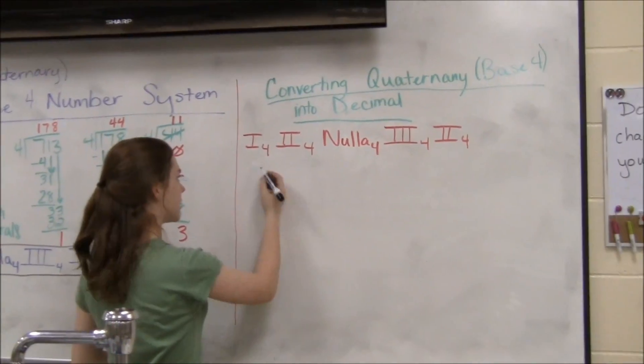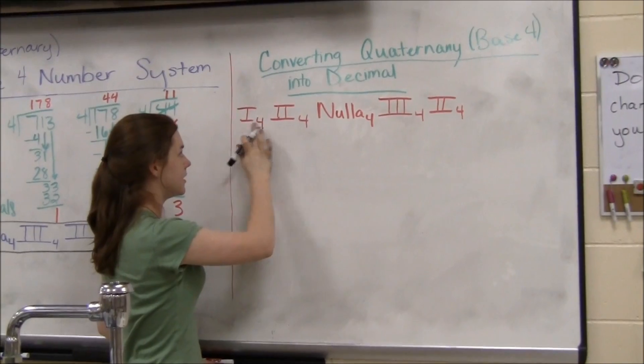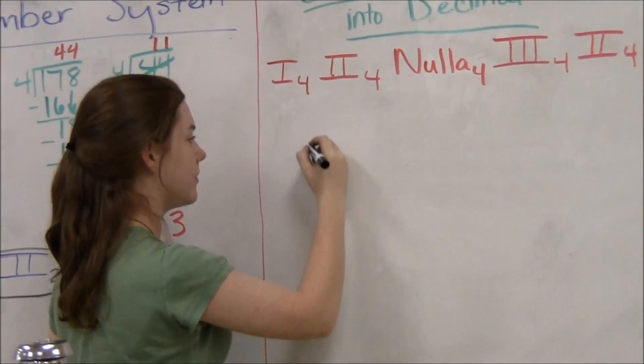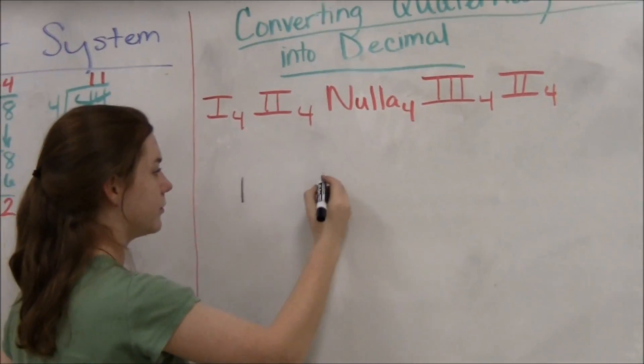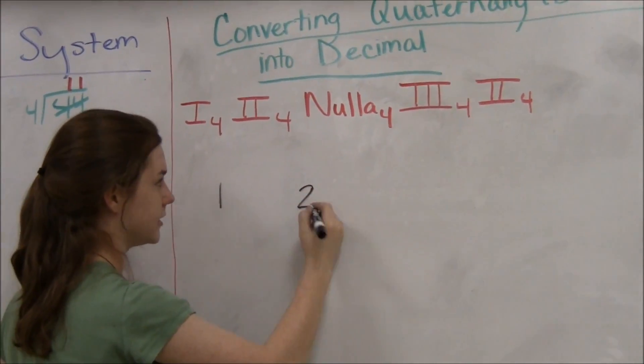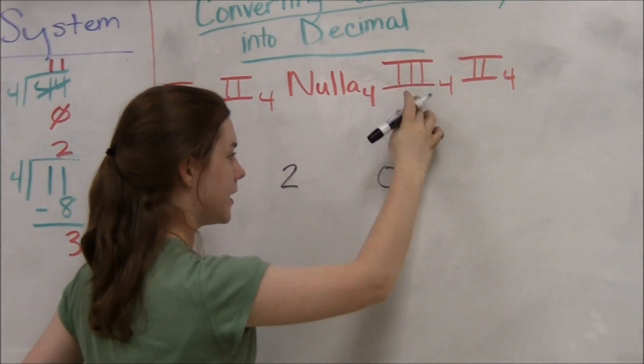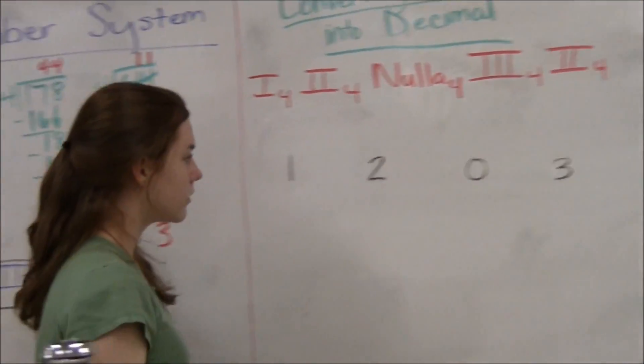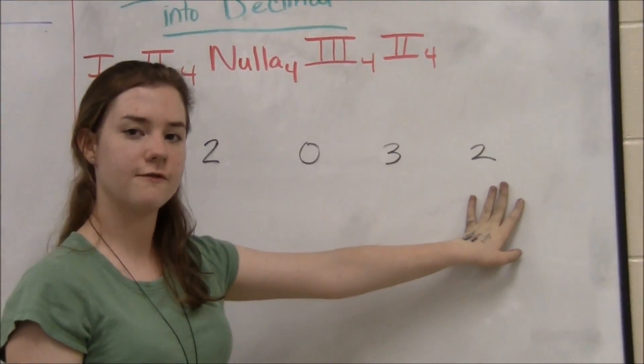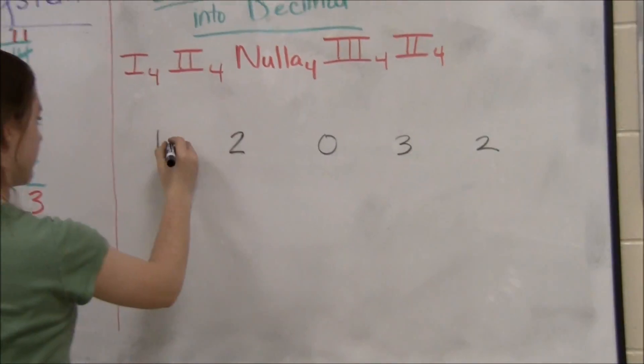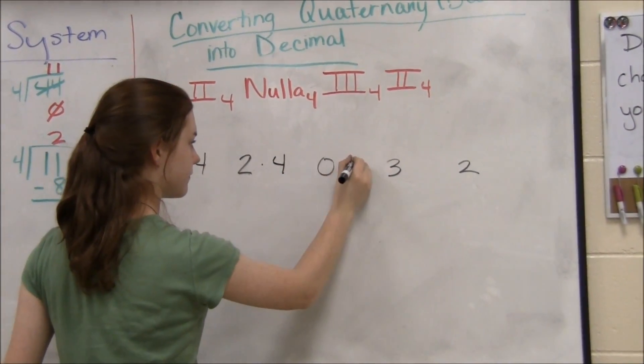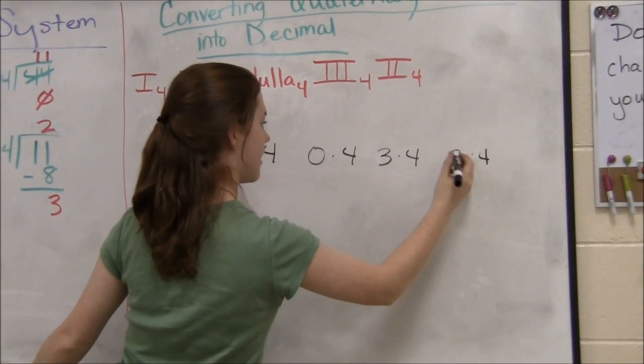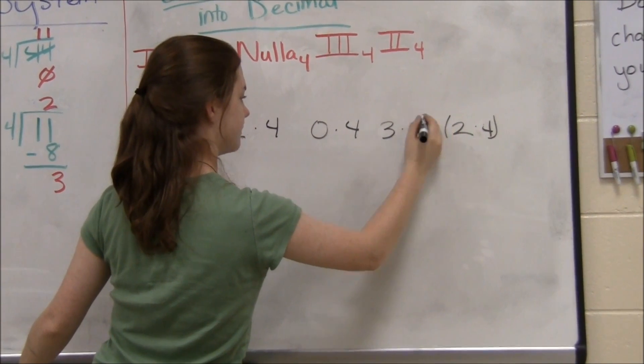To convert back, we'll start by exchanging each of these Roman numerals with their decimal value. For example, i will be 1, ii will be 2, nulla 0, iii 3, and ii 2. We'll then multiply each of these numbers by 4 and add them to each other.